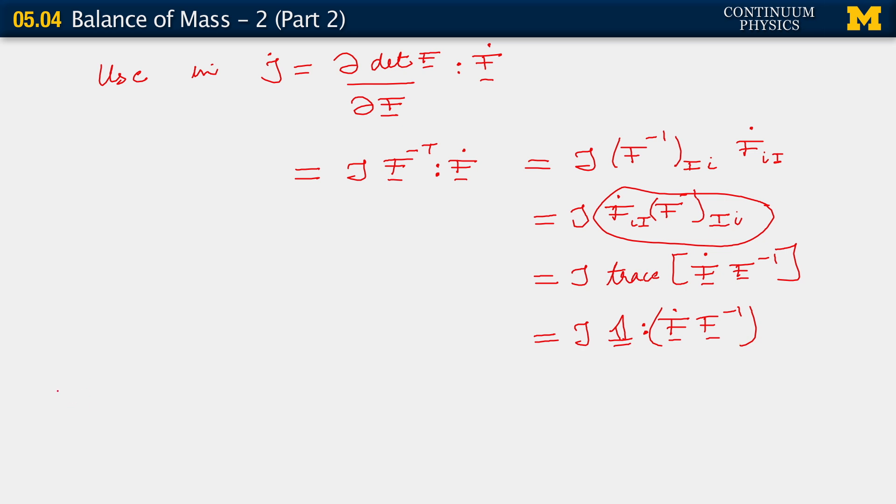Put it all together. So, what do we have? We have derivative of rho zero with respect to time equals, I'm going to suppress the writing of arguments. The first term that we got was this. We had the material time derivative of the spatial mass density.